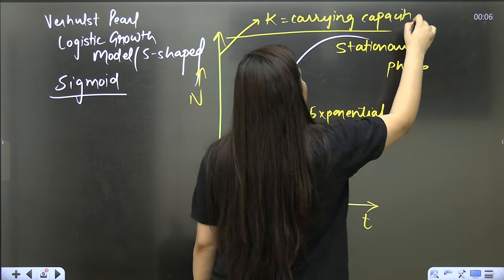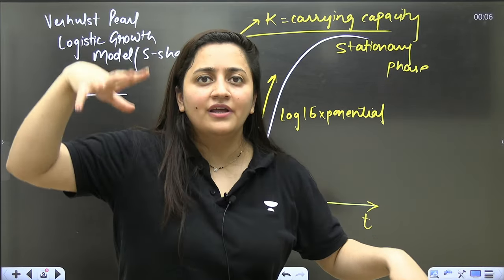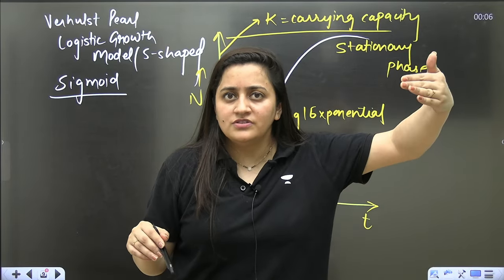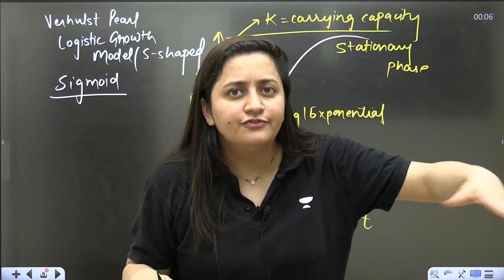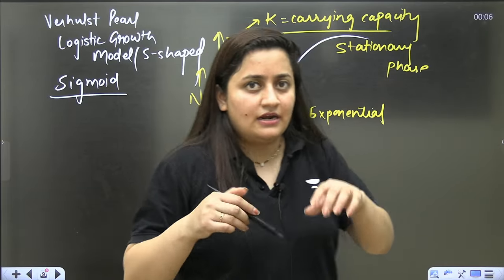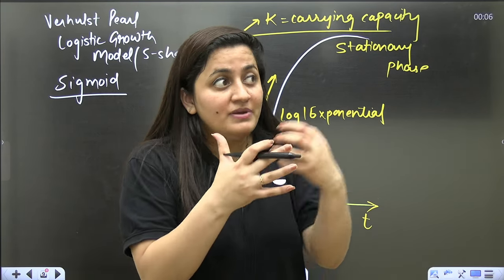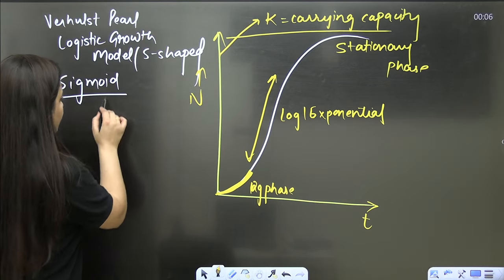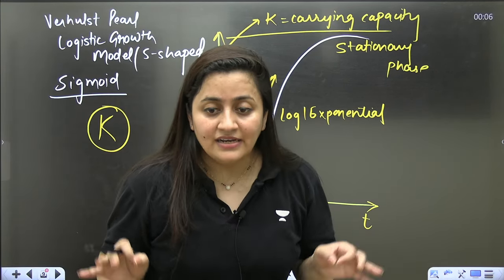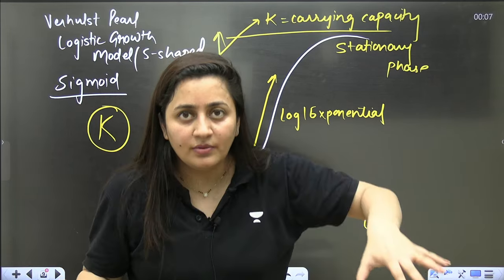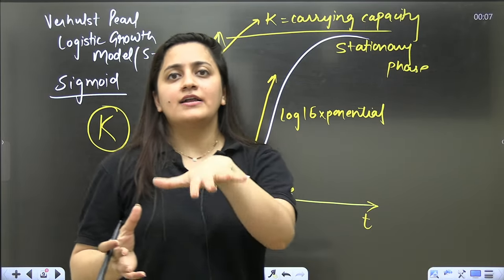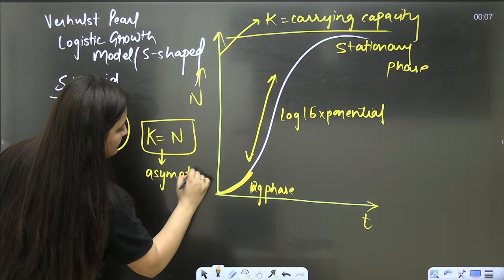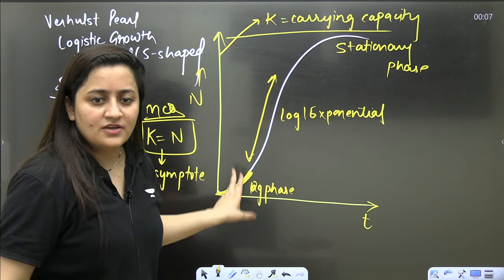Carrying capacity is the capacity of a place — for example, a place that can accommodate 100 people with resources for 100 people. Initially when numbers are 40–50–60 it's fine, then competition starts and there is a struggle for survival and resources. The S-shaped sigmoid growth curve considers limited food and limited space, so competition and all related factors apply.